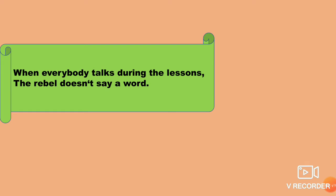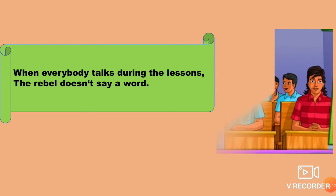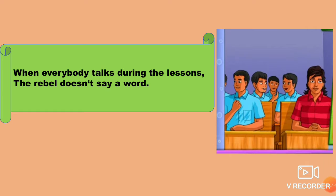When everybody talks during the lessons, the rebel doesn't say a word. So when everybody is talking in the class, the rebel doesn't say a word. He pretends as if he is a very good boy, to gain the attraction of the master or anybody there. This is the way the rebel reacts.